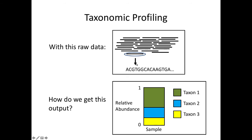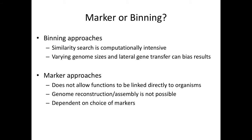Now, talking about taxonomic profiling. We've processed our data — how do we figure out who's there in the community? We have reads — strings of nucleotides — and we need to go from that data to knowing which taxa are present at what relative abundances. The two major classes for doing this with shotgun metagenomics data are marker gene and binning approaches. I'll go into more detail on both, focusing on one tool from each class.